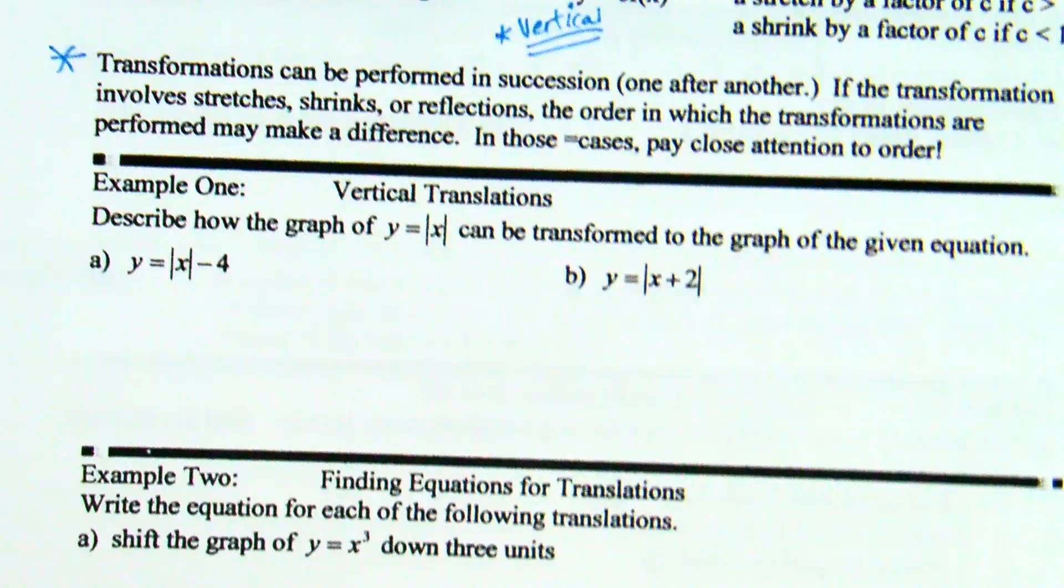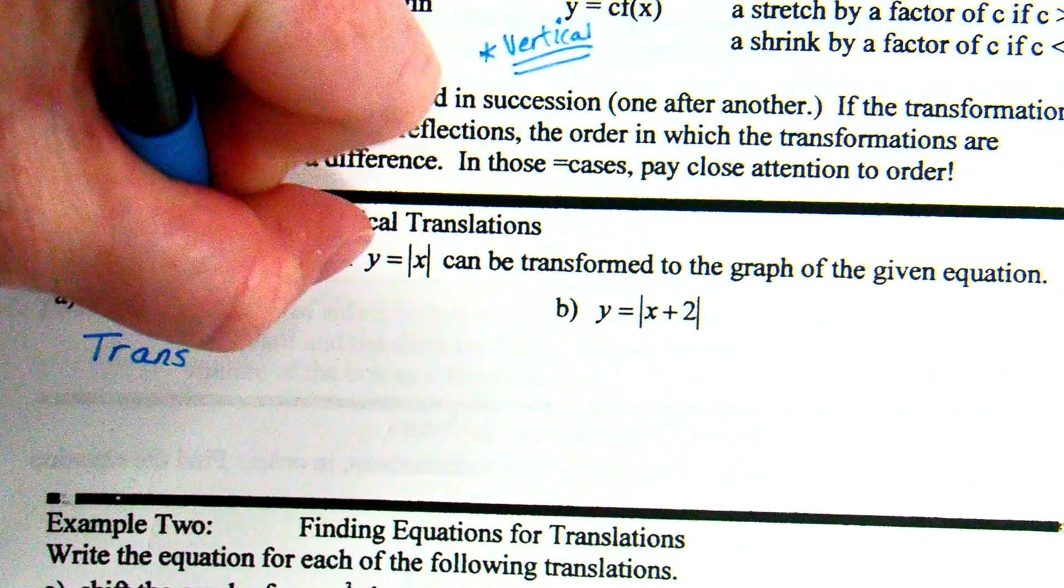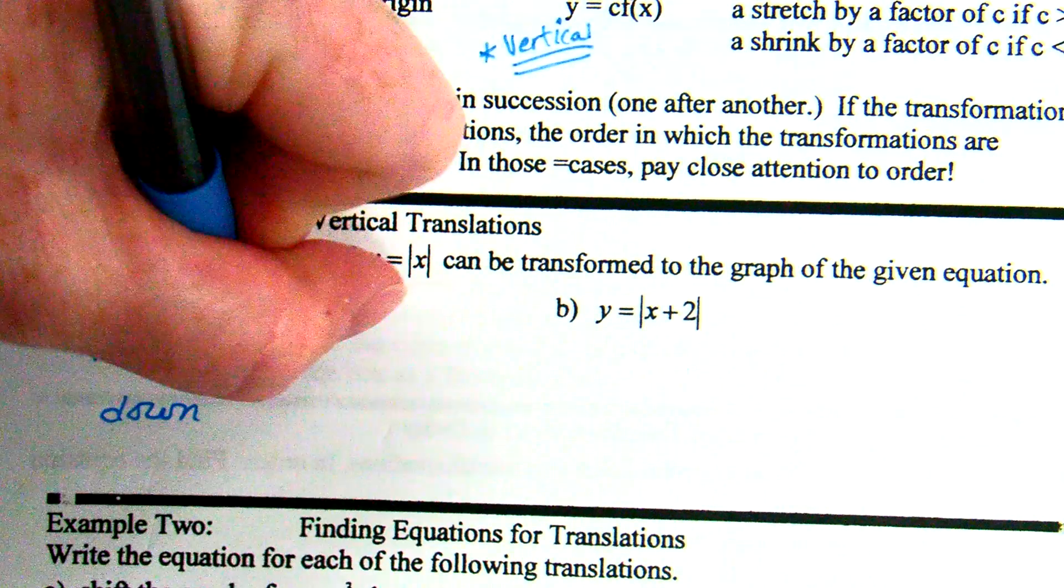Let's look at some of these examples. Example one. Describe how the graph of y equals absolute value of x can be transformed to the graph of the given equation. So y equals absolute value of x is your parent function. Parent function meaning it's the base function. So if it's y equals absolute value of x minus 4, what's that doing? How do I know it's going down 4? It's outside the absolute value, so it's up or down direction of the sign. Now do me a favor, don't just put down 4. What's your verb here? Translated, shifted, moved. Give me some kind of verb there, short of just saying down 4. Mathematically, translated down 4 is probably your best bet.